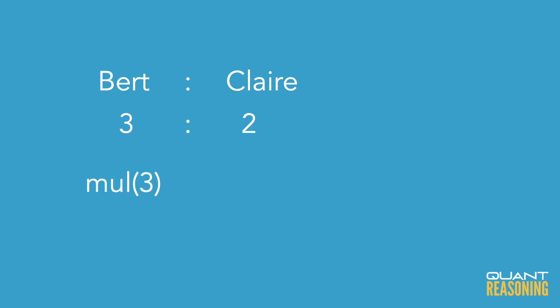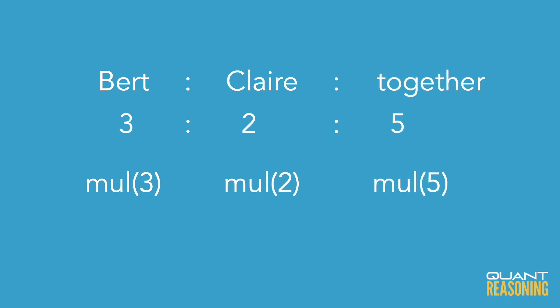The same idea goes for Claire — she has to have an even number of coins, and together they have to have a multiple of 5. But this on its own can't be sufficient because we don't know which multiple of 5. So eliminate A, and we're down to C and E.